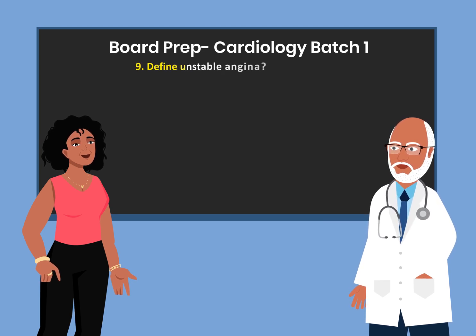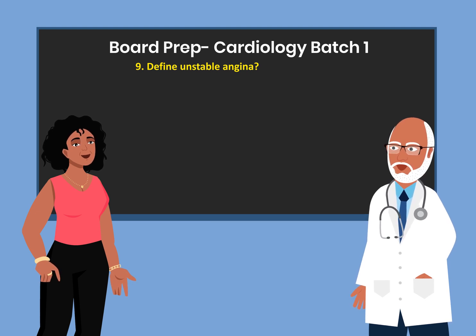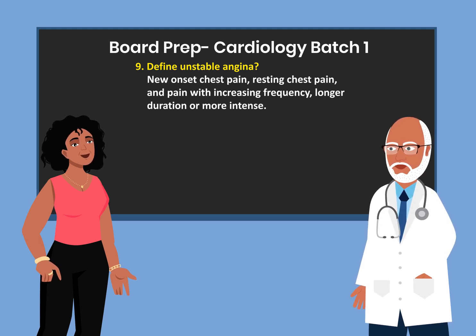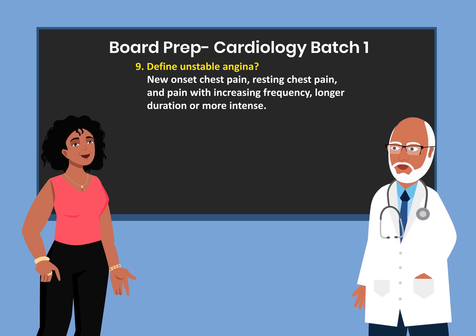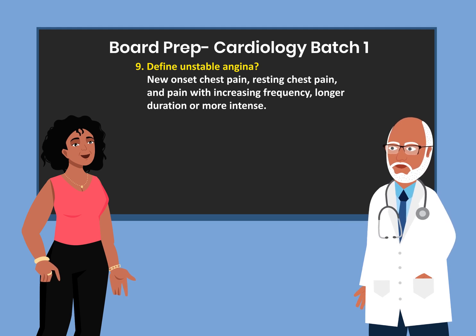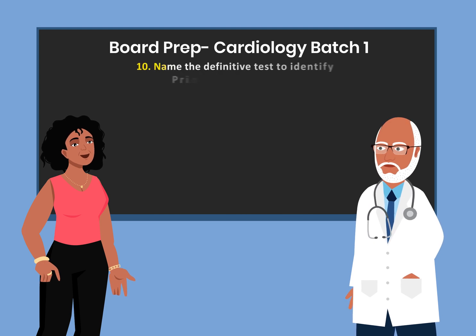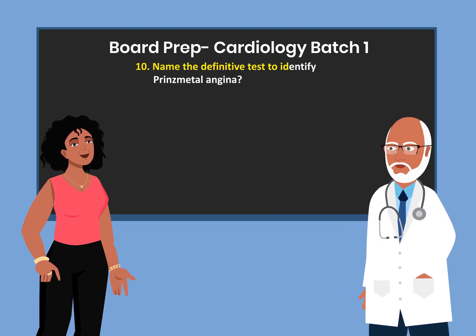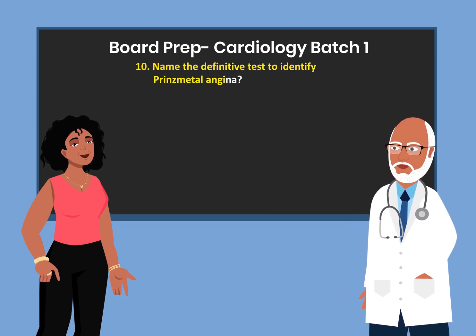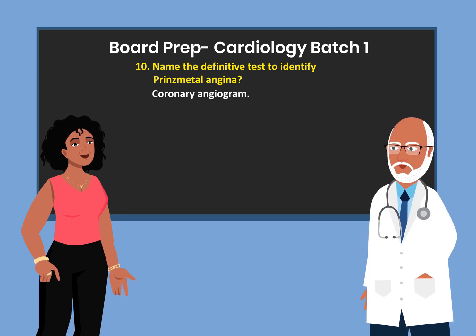Define unstable angina. It is new onset chest pain, resting chest pain, and pain with increase in frequency, longer duration, or more intense. Name the definitive test to identify Prinzmetal angina. Coronary angiogram.